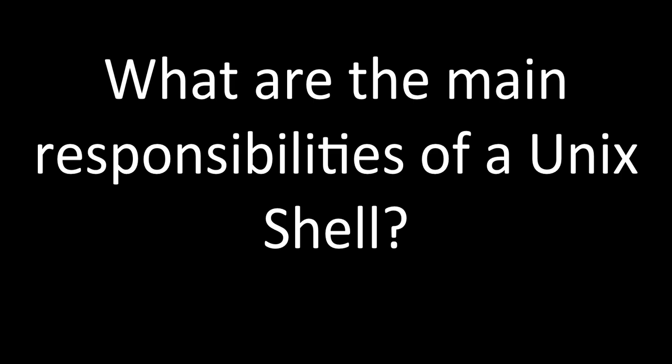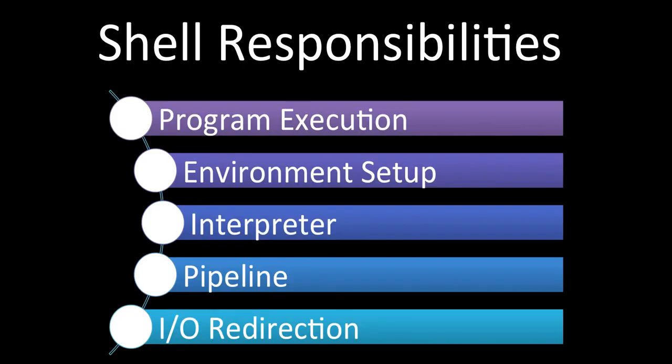Some of the main responsibilities of a UNIX shell are: program execution, environment setup, interpreter, pipeline, and IO redirection. These are the five main responsibilities. Let's go into each of them in detail.